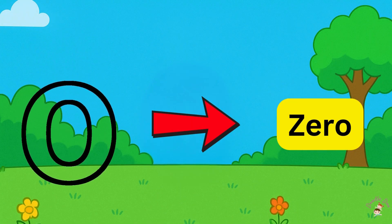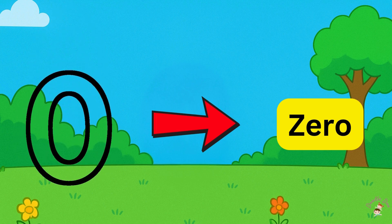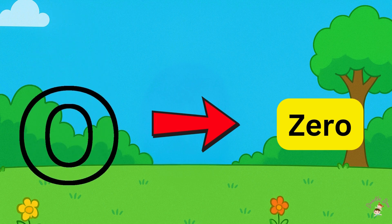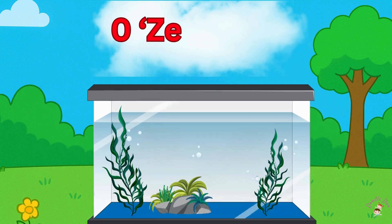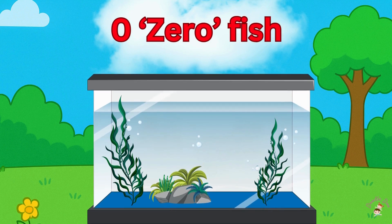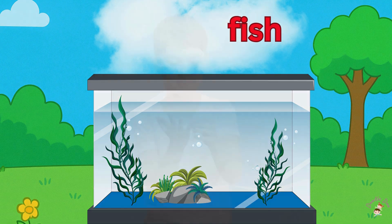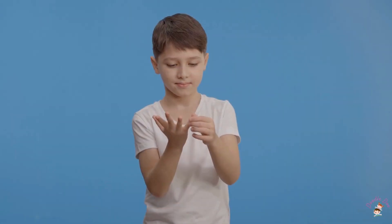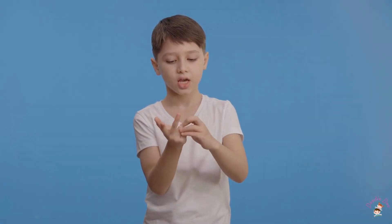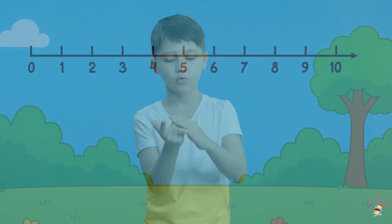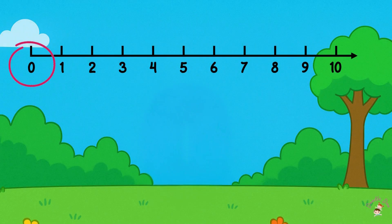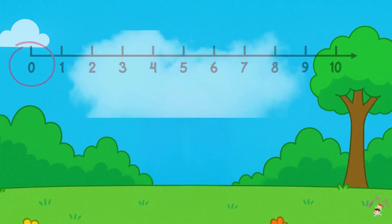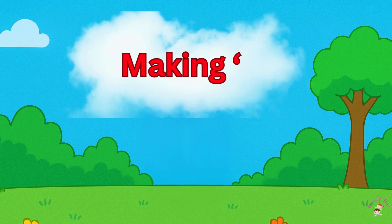We can write the number Z-E-R-O. For example, there is a fish tank with zero fish. On counting, zero comes before one. See the number line. Now we will learn making zero.